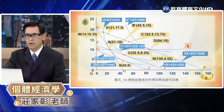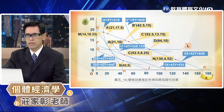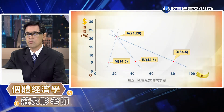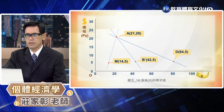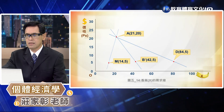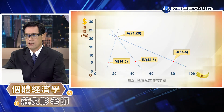接下來第五節要介紹的是價格效果、價格消費曲線和需求曲線。在圖5-13當中，原始的消費均衡點 A 括號21單位移到新的均衡點84單位，顯示香蕉的價格效果是63單位。如果將價格的變化放在縱軸，消費均衡點放在橫軸，我們就可以獲得一條需求曲線，如圖5-14的 AD 這條線所示。